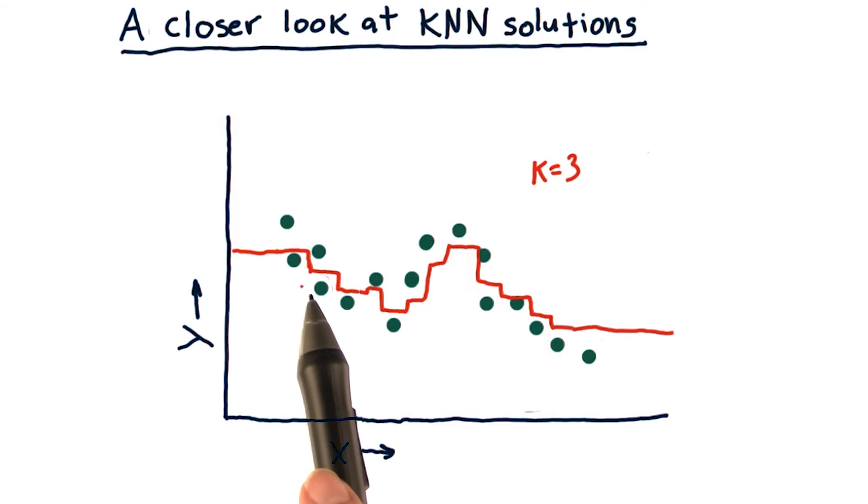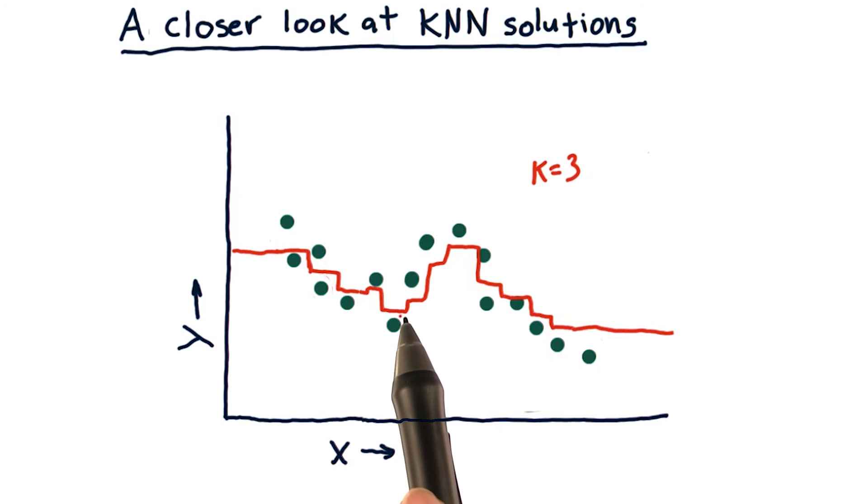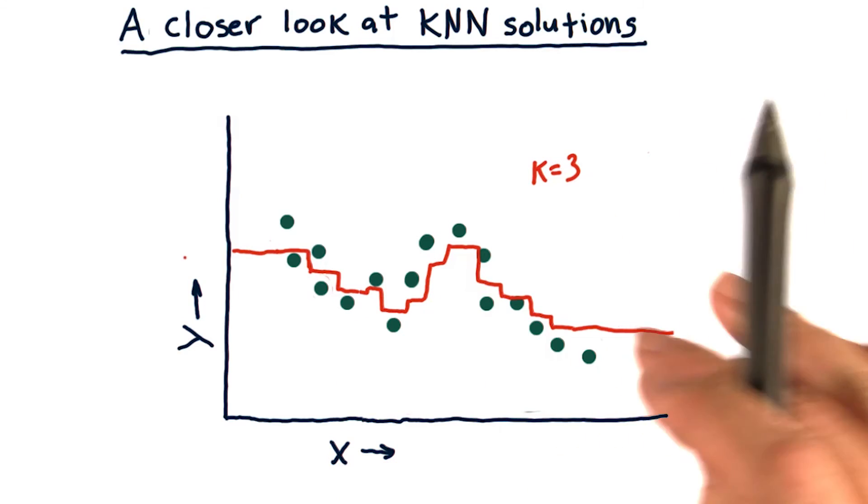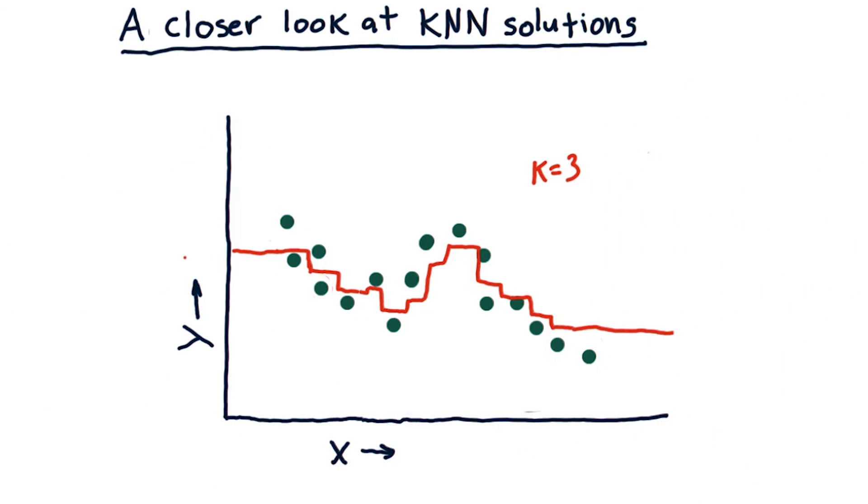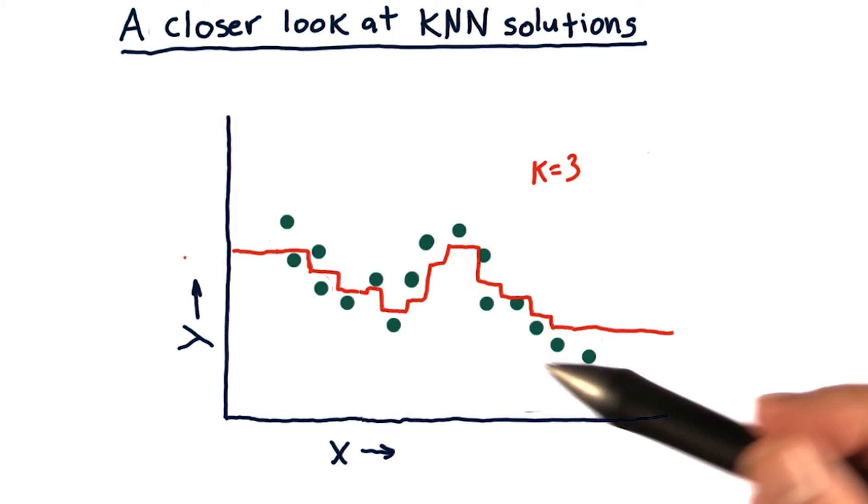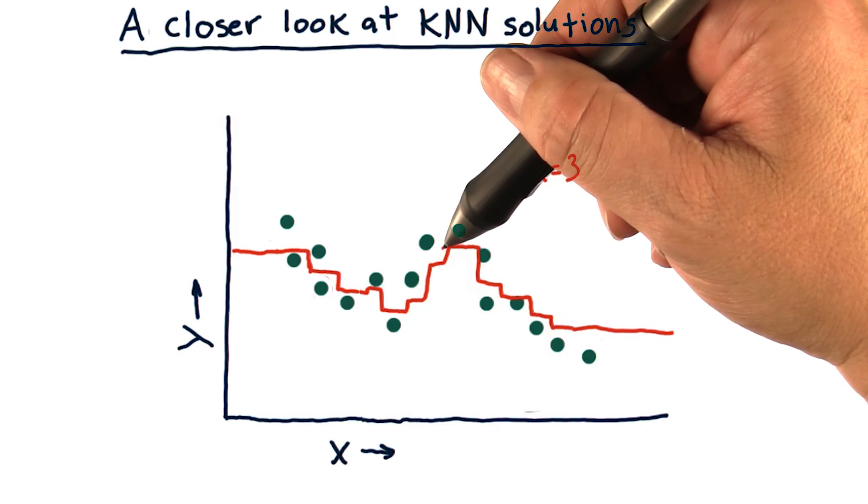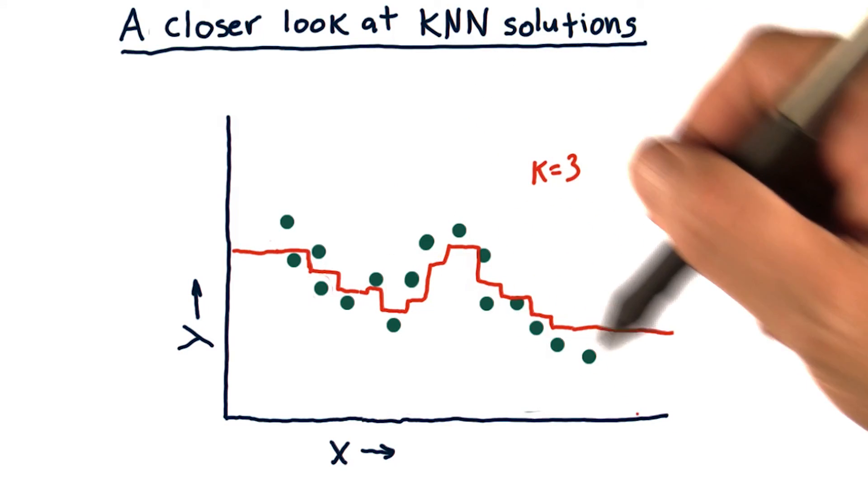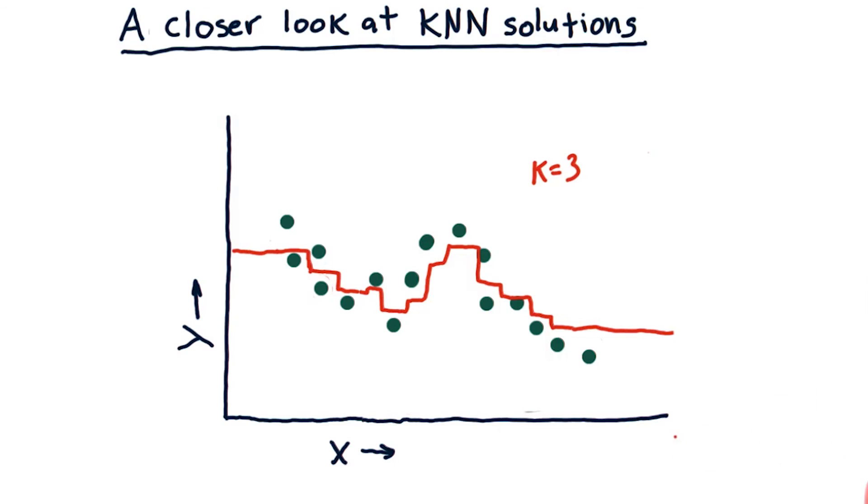Some nice things about this are that it's not overfitting the data. In other words, it's not tagging each point. A negative aspect though is at the ends there, we have these horizontal lines that are no longer changing. Or essentially, this model is not able to extrapolate like we might if we had a parametric model.